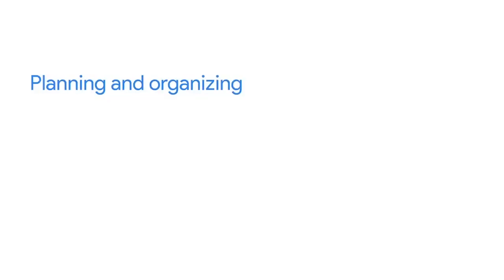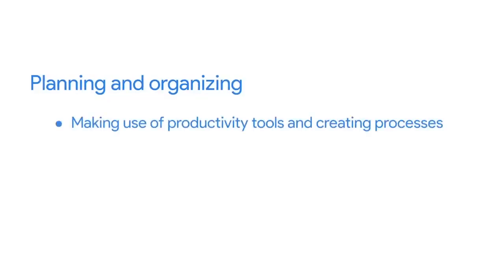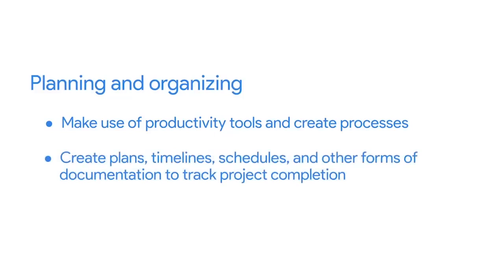Let's break these down into examples of responsibilities you might find in a job listing for a project management role. Starting with planning and organizing: one responsibility is making use of productivity tools and creating processes. During the planning and execution of a project, you might need to use certain tools and develop processes to improve information sharing across the team. You may also need to create plans, timelines, schedules, and other forms of documentation to track project completion, and maintain those documents throughout the entirety of the project.